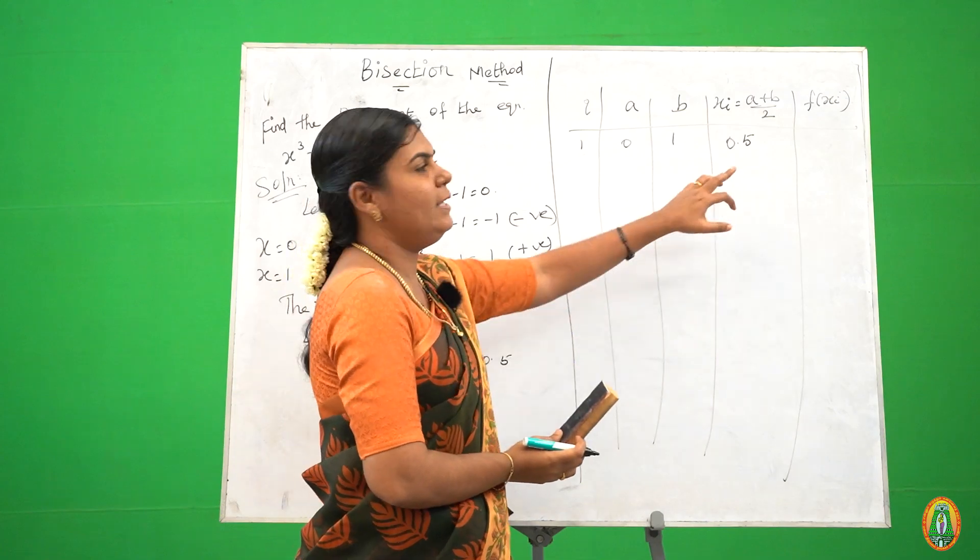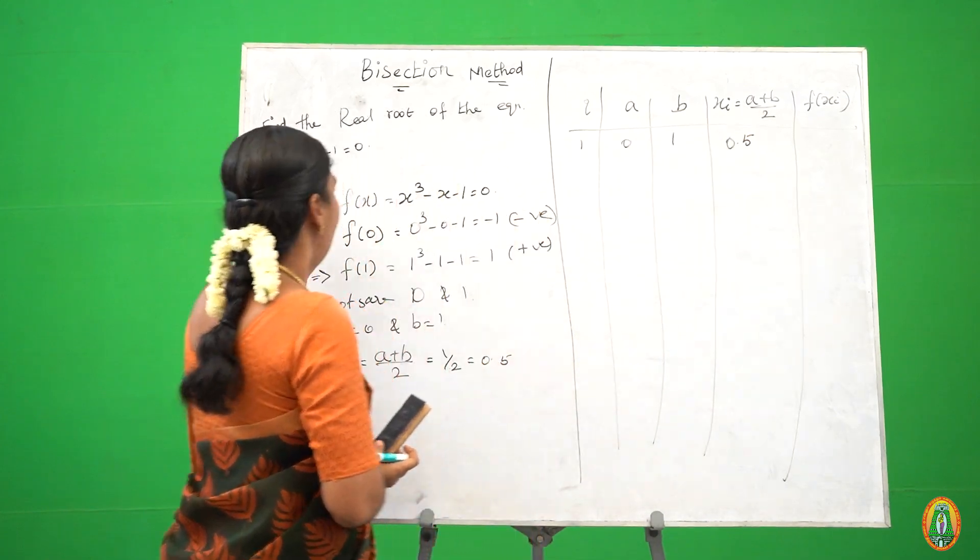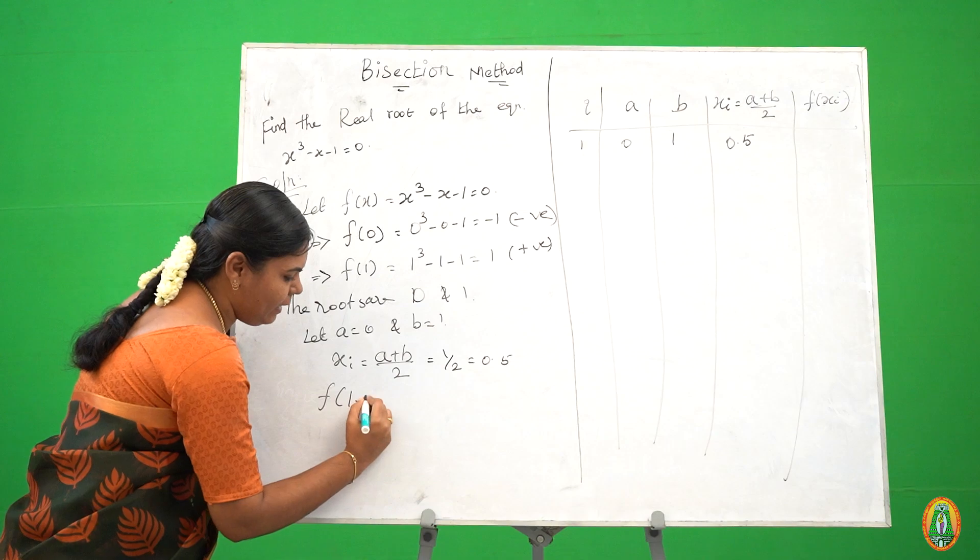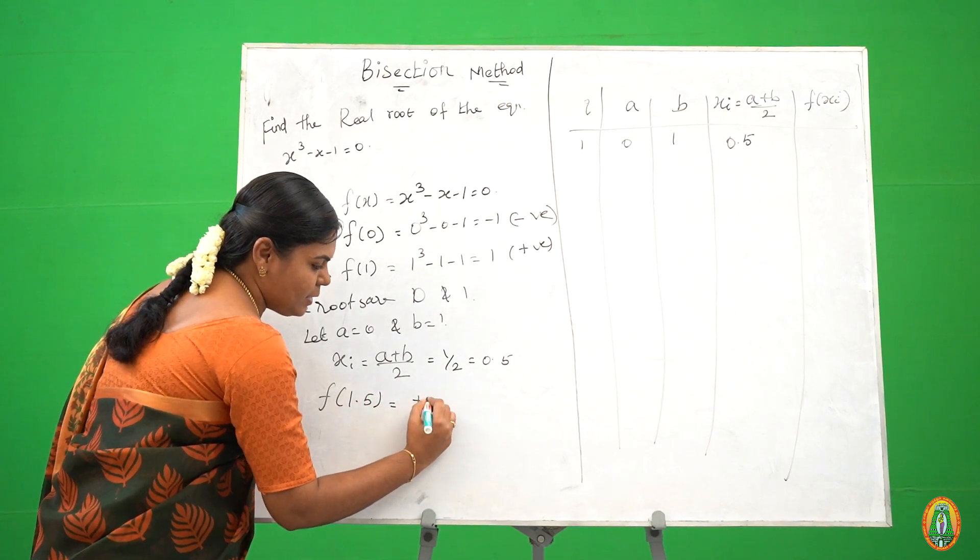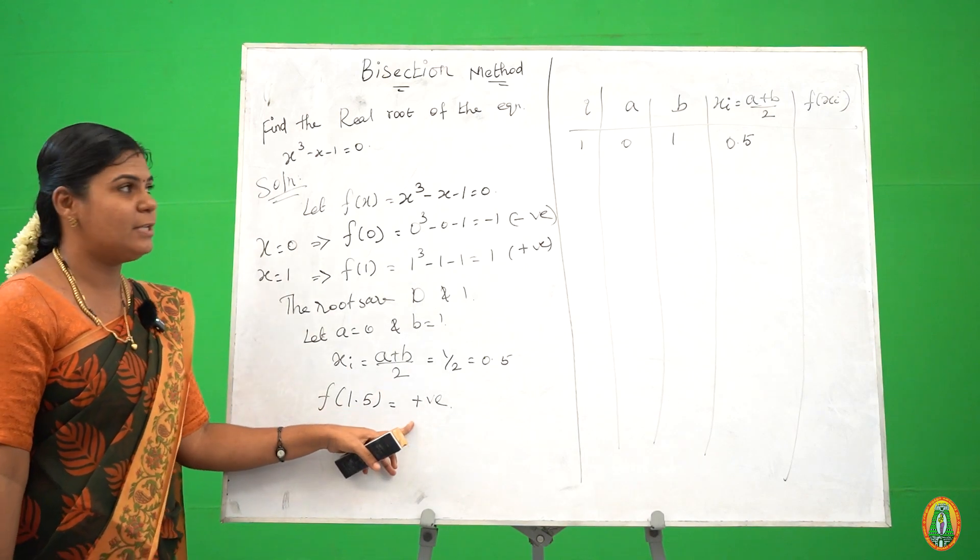We substitute 0.5 in f of xi. So the value is positive. We got a positive value.